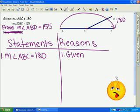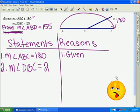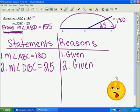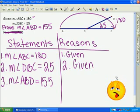We are also given measure of angle DBC is equal to 25. That's the smaller angle right here. How do you get what's left? You can subtract. So we can conclude that the measure of angle ABD must be 155. And again, we subtracted the angle. So our reason is angle subtraction.